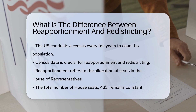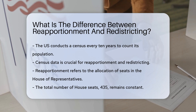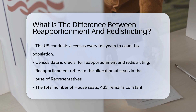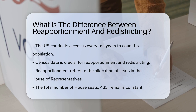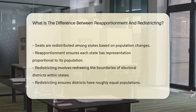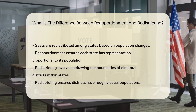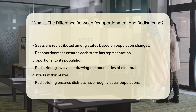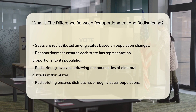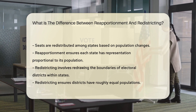Reapportionment refers to the allocation of seats in the House of Representatives. The total number of seats — 435 — remains constant. Based on population changes, seats are redistributed among the states. This ensures each state has representation proportional to its population.